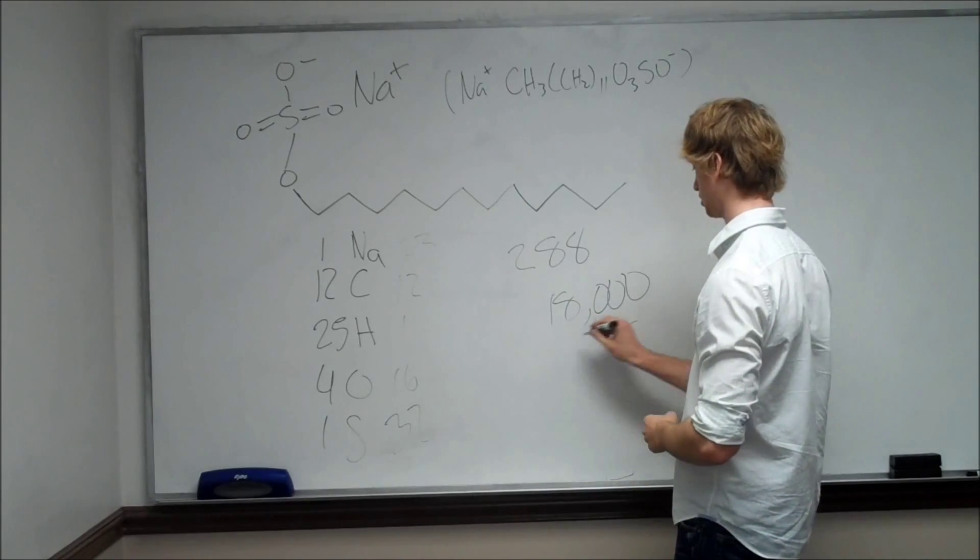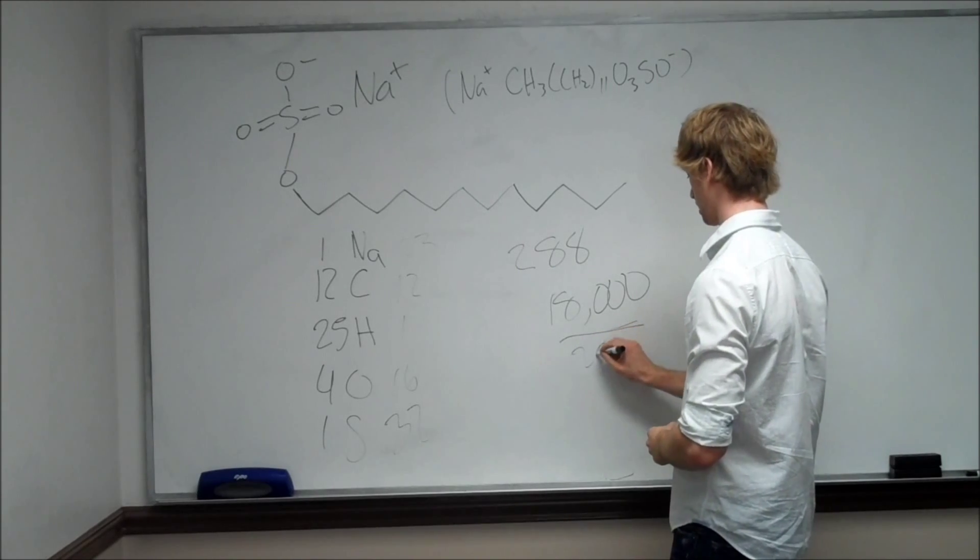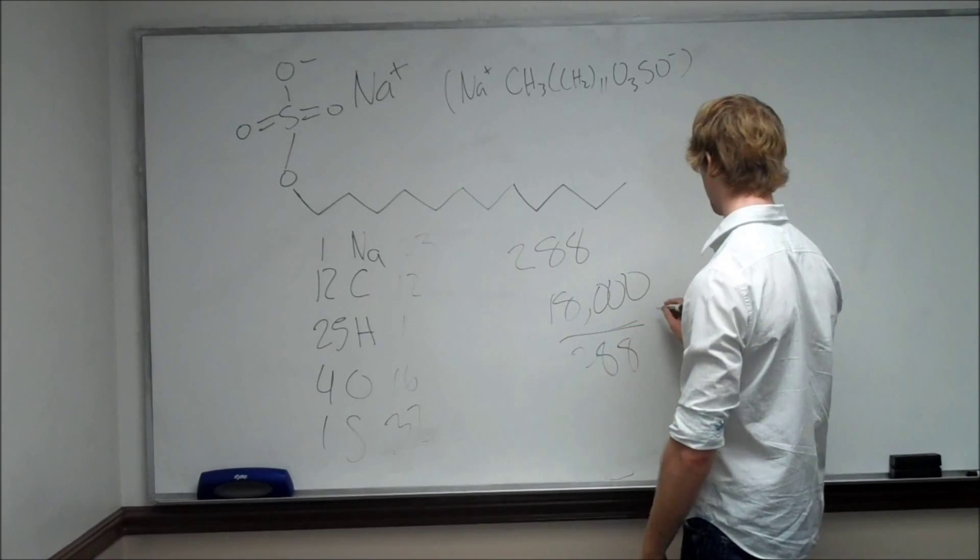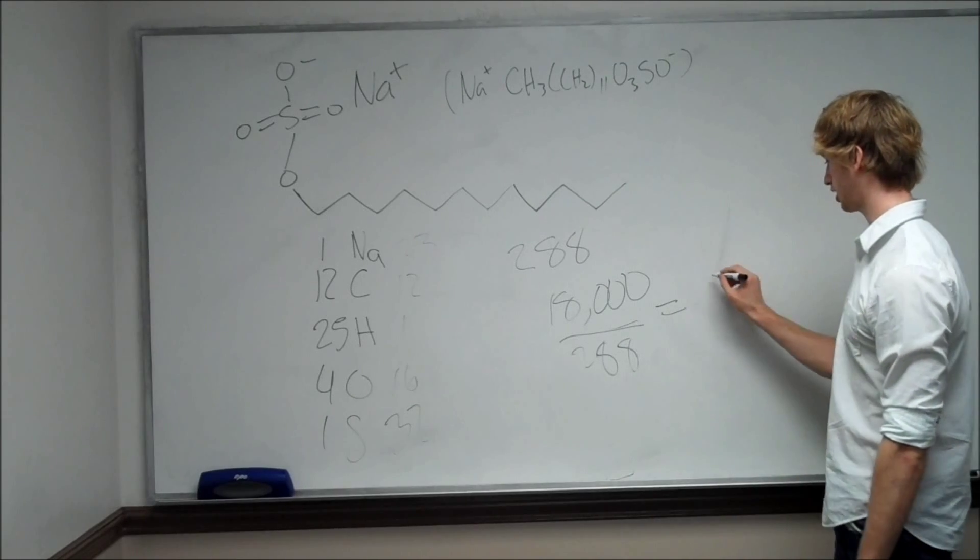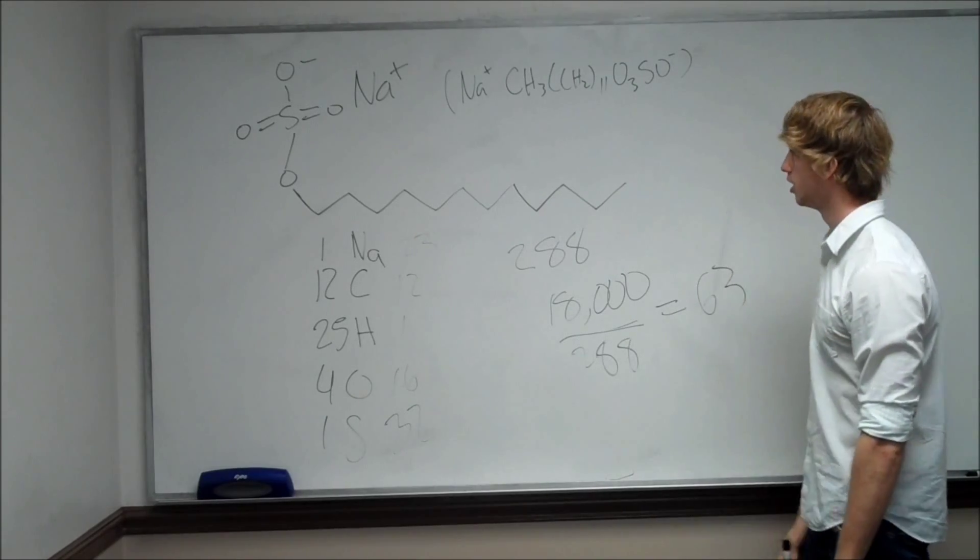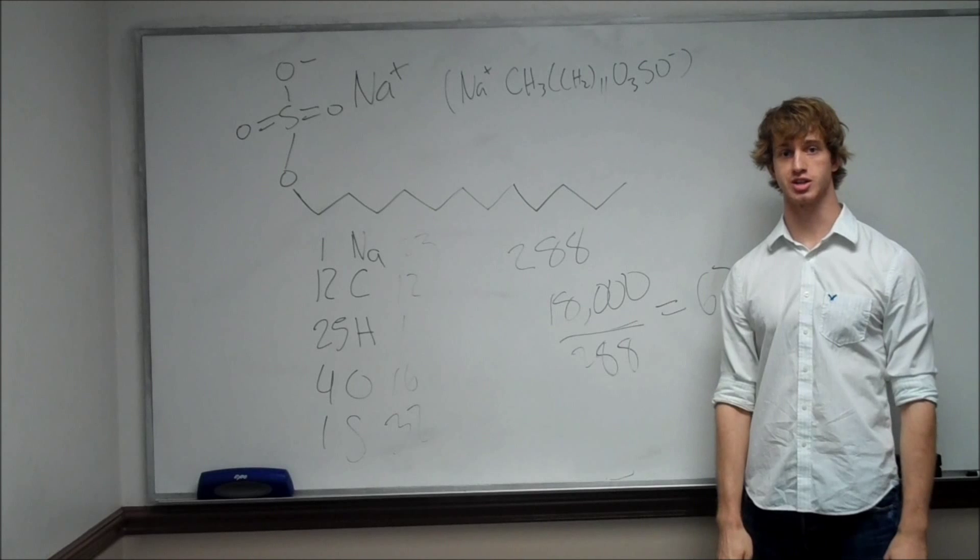So take 18,000, divide this by 288, and if you just plug that into your calculator, you should get 63. And that is how you do number 6.